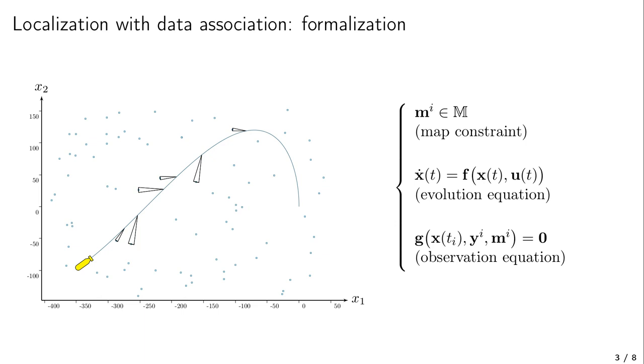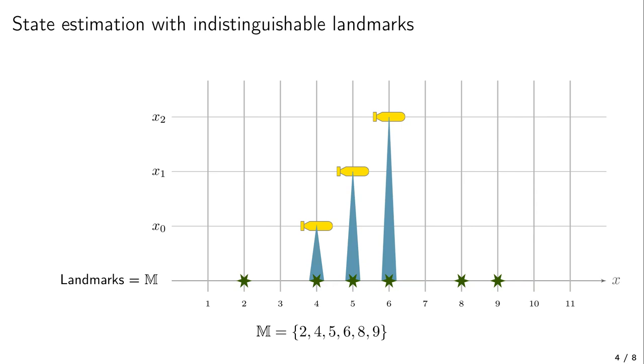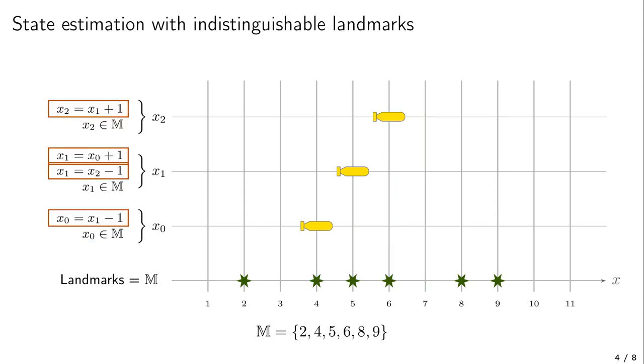We propose in this work to solve it by using a constraint propagation approach. And to understand how constraints can solve this problem, let us consider this simple 1D example. So let's start with a given map M made of six landmarks. We will perform a state estimation over three steps and try to compute the feasible values for the state. The three yellow robots are the actual positions that we are looking for. And as one can see, the three robots are perceiving a landmark. This means that for the three steps, we can consider the following constraints. We know that these states belong to the map. And of course, the robot moves. So we add the following evolution constraints to link the states among each other. And now the constraint propagation can start.